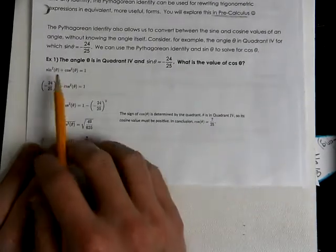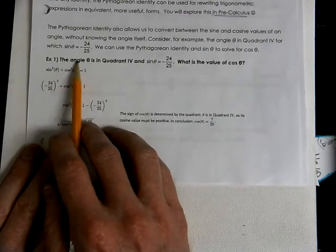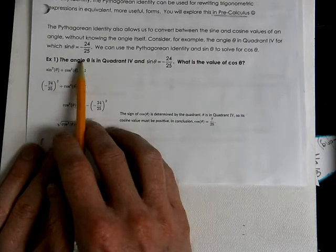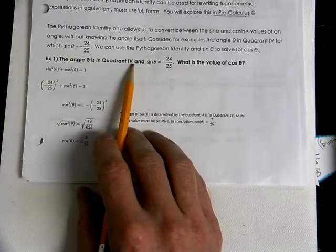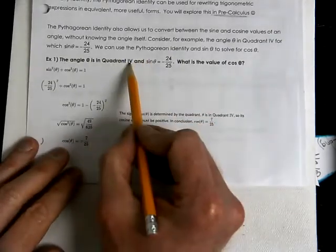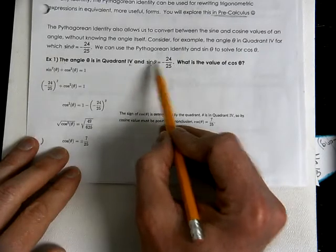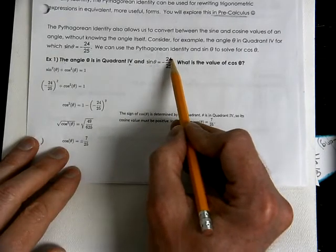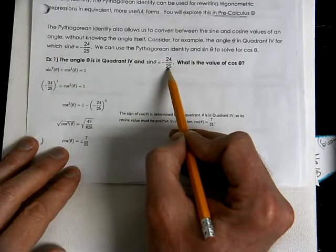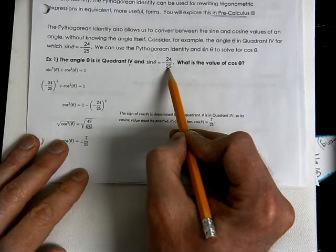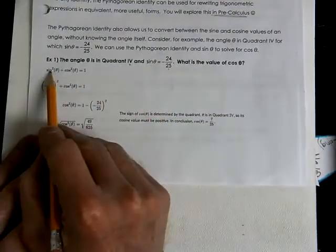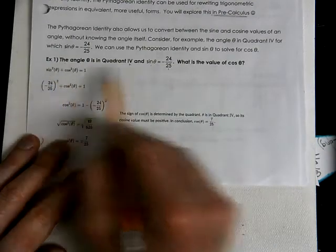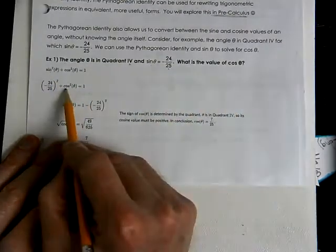So we're going to have an angle theta in the fourth quadrant. That's a key idea that you need to be aware of. Sine is negative 24 over 25. So we're going to plug our sine value in for this sine. Then we're going to solve for the cosine.